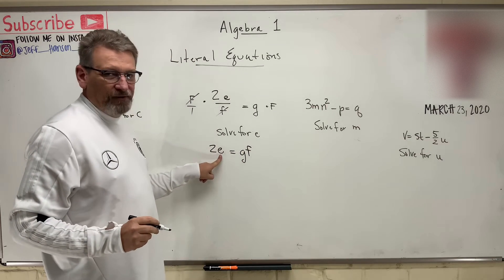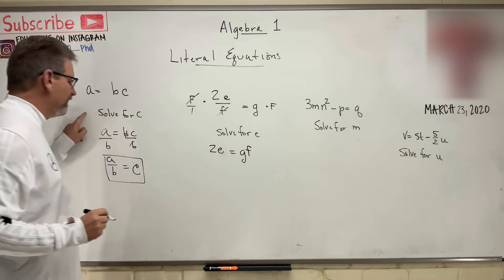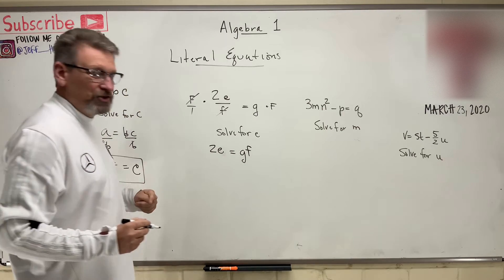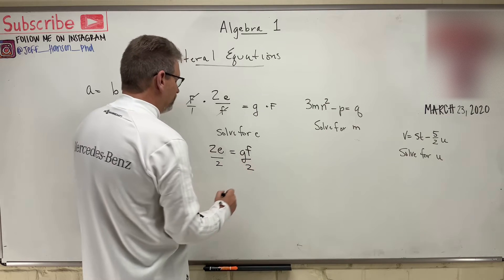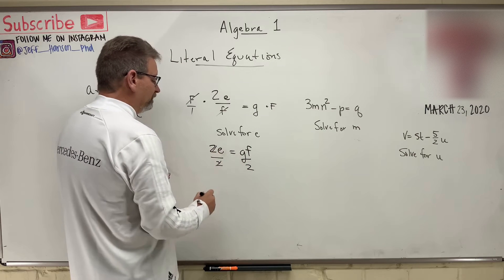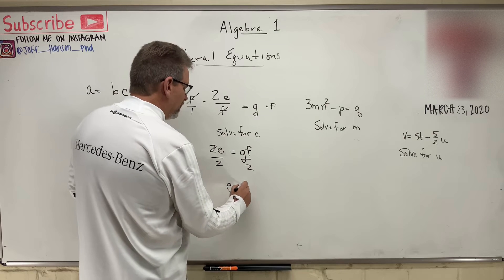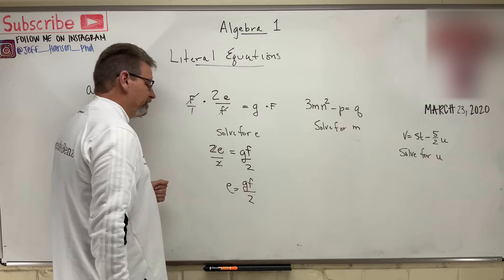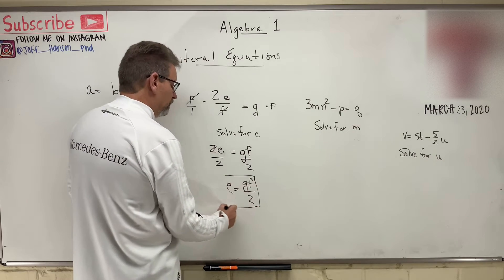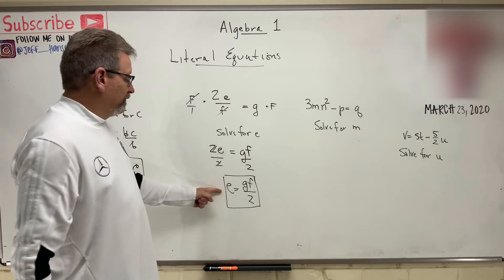Now, I want E all by himself. So, what? Same as over here. Then just divide by the 2, right? Divided by 2. Divided by 2. The 2's cancel out, and I'm left with E is equal to girlfriend divided by 2. That's the answer, okay? Piece of cake, right?